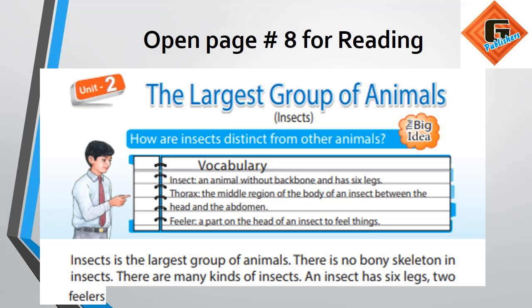Insect is the largest group of animals. There is no bony skeleton in insects. There are many kinds of insects. An insect has six legs and two feelers.